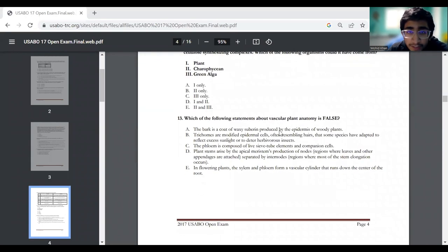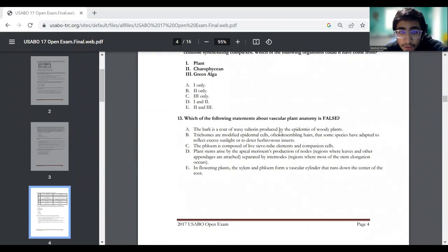Next question. I think this would be the last one for today. Question number 13. Which of the following statements about vascular plant anatomy is false? So we're not looking at what's true, we're looking at what is false. The bark is a coat of waxy suberin produced by the epidermis of woody plants. Right off the bat, I know that this is the answer, and here's why.